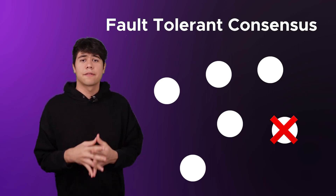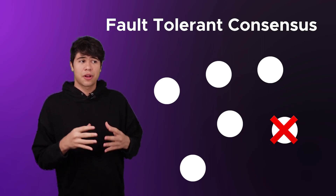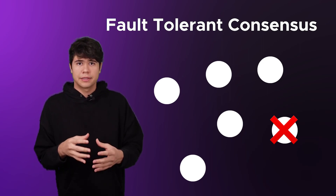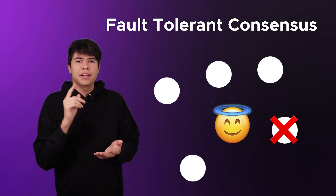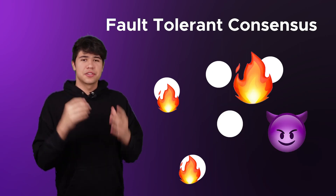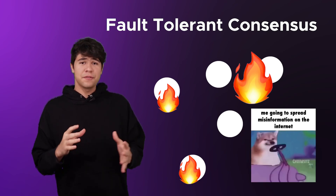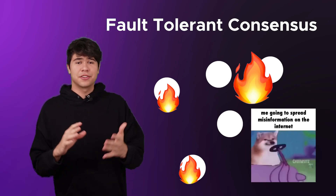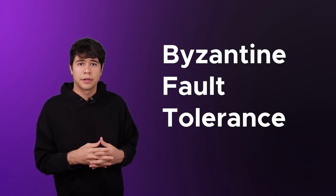Paxos and Raft were very important breakthroughs in consensus, but had one problem. These were complicated systems that were only fault tolerant, which means these nodes can go offline or crash, but assumes that these nodes are always honest. So these networks would get destroyed if there's a bad actor sharing malicious information. Imagine if you had a permissionless network that anyone can join and you just trusted people not to spread misinformation. This problem would make a new era of consensus protocols with something called Byzantine fault tolerance.